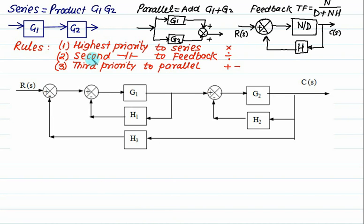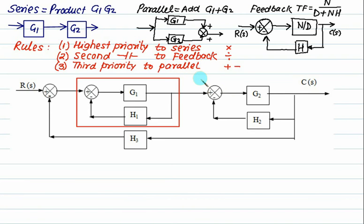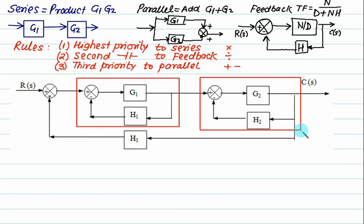Observe the priority rules first. Do you have any series operation here? No. Do you have a feedback operation? Yes. So let's close this feedback operation part. Simultaneously we have also one more feedback. These are independent so we will perform them independently.